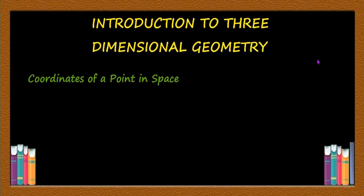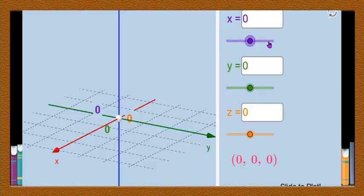Dear students, in this video I will explain the coordinates of a point in space. I will explain the method of plotting a point in three dimensional space. Let us start with the point at origin, that is when x equal to 0, y equal to 0, and z equal to 0, the point is at the origin.